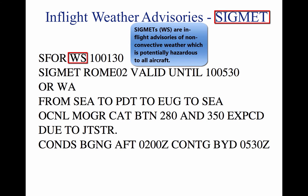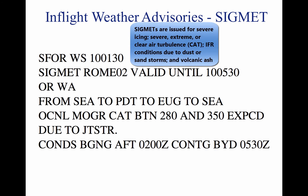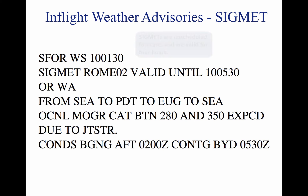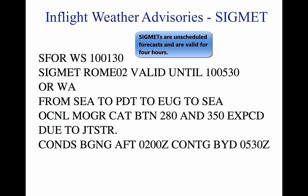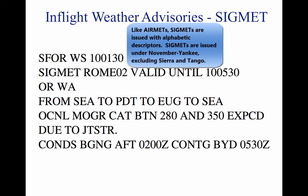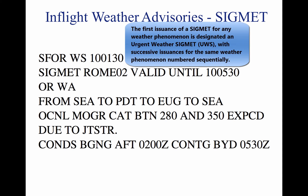SIGMETs (WSs) are in-flight advisories concerning non-convective weather that is potentially hazardous to all aircraft. They report weather forecasts including severe icing not associated with thunderstorms, severe or extreme turbulence or clear air turbulence not associated with thunderstorms, dust storms or sand storms lowering visibilities below 3 miles, and volcanic ash. SIGMETs are unscheduled forecasts valid for 4 hours, issued under an alphabetic identifier from November through Yankee, excluding Sierra and Tango. The first issuance is designated as an Urgent Weather SIGMET (UWS). Reissued SIGMETs for the same weather phenomenon are sequentially numbered until the phenomenon ends.